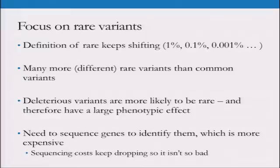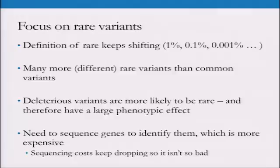The reason people might want to look at rare variants is because there are a bunch of them across all of the different populations. And deleterious variants, since they're bad for you, are likely to be rare. If you're thinking about evolutionary selection, if something's that bad and it pops up, you're not going to see it in half the population. So it's going to be one of these really rare variants, and they're also going to have a larger phenotypic effect than some of the common ones.